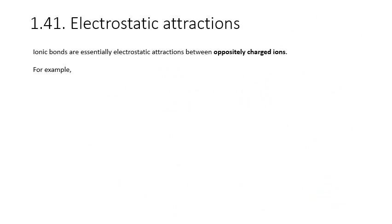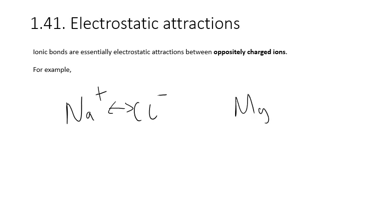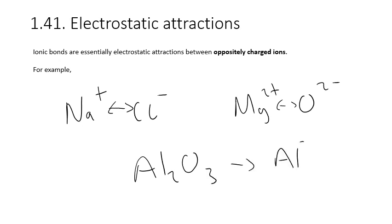You might be asked to describe ionic bonds in terms of electrostatic attractions. An ionic bond is an electrostatic attraction between oppositely charged ions. In sodium chloride we have Na1+ ions and Cl1- ions attracting each other because they are oppositely charged — just like Mg2+ with O2-, or in Al2O3 where Al3+ ions attract O2- ions. The key point is that an ionic bond is an electrostatic attraction between oppositely charged ions.